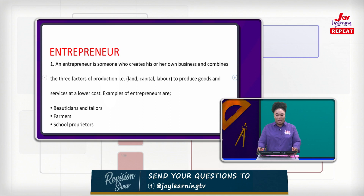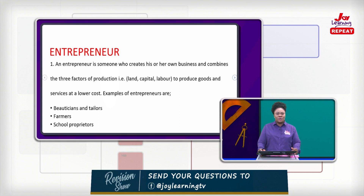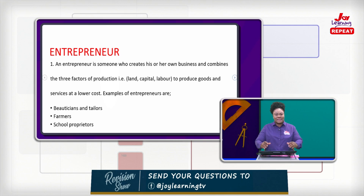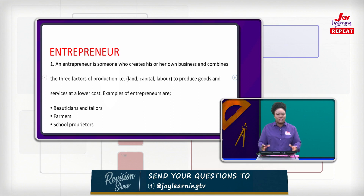For example, when we talk about the three factors of production, we are talking about what you need before you go into a business. You must get land — a site where you put your structure. Then capital — you need a little fund to support what you want to do. And labor — the people that will support you to do the work to have a massive production.